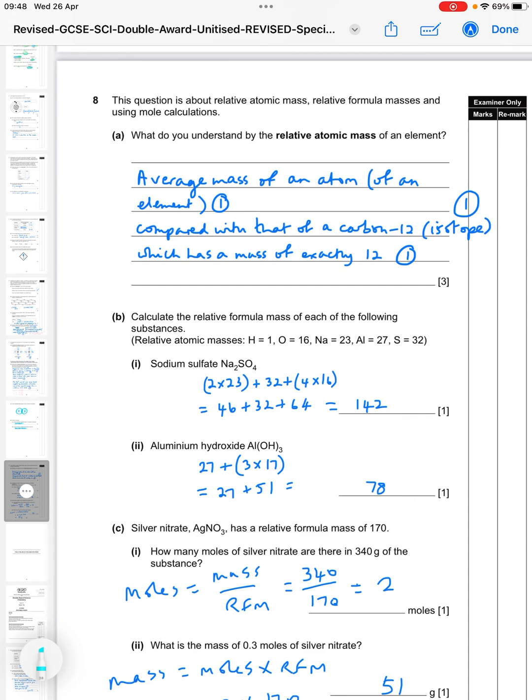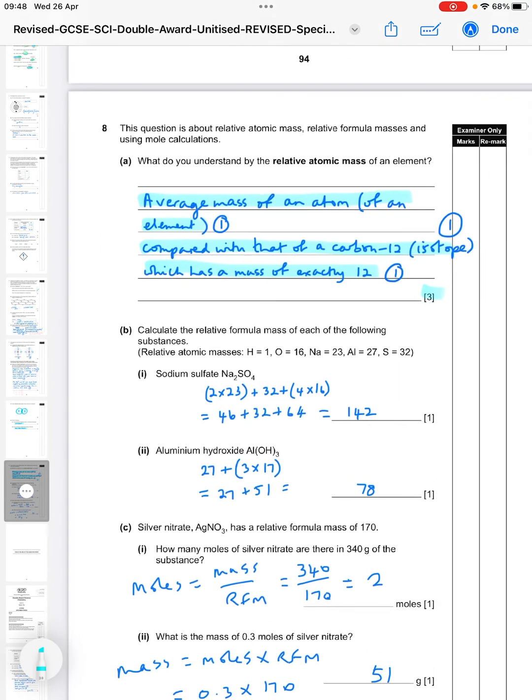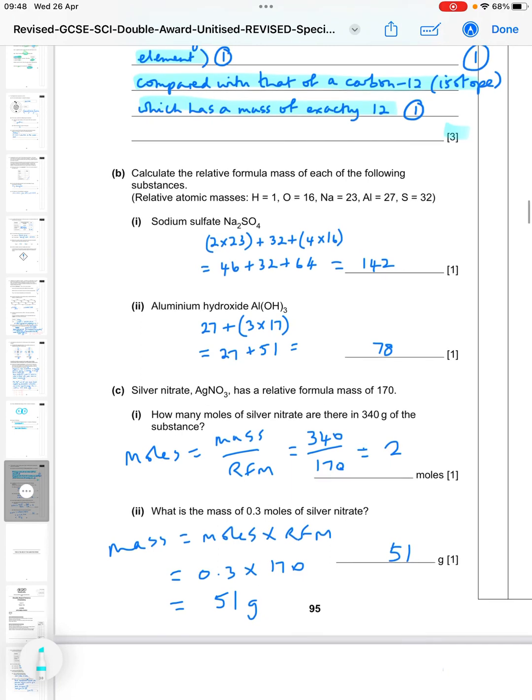The final question, then number eight, it's about relative atomic mass, relative formula masses and using mole calculations. So what do you understand by the relative atomic mass of an element? So three marks for this - you're having to say three things. The first thing is that the average mass of an atom of an element, then compared with that of a carbon-12 isotope, which has a mass of exactly 12.